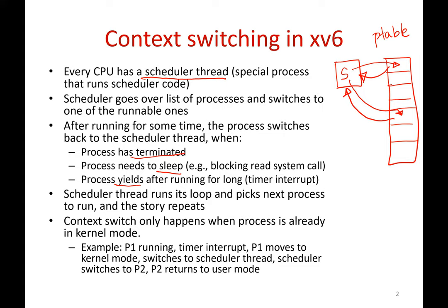Note that context switching only happens when the process is already in kernel mode. A process in user mode cannot say it wants to context switch to somebody else. Suppose a process P1 is running user code — it has to jump into kernel mode, jump to its kernel stack, start executing on its kernel stack, and then switch to the scheduler thread.